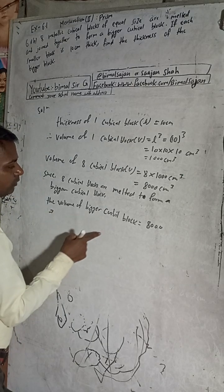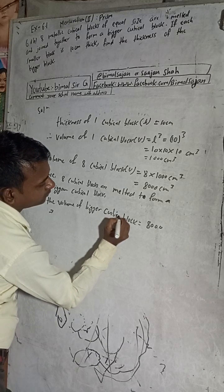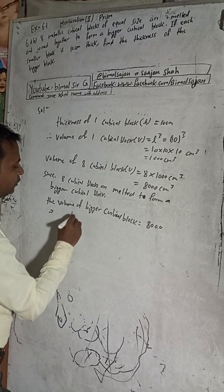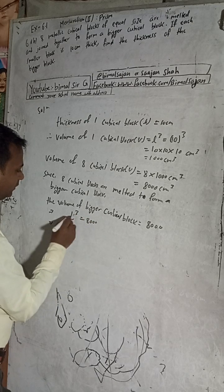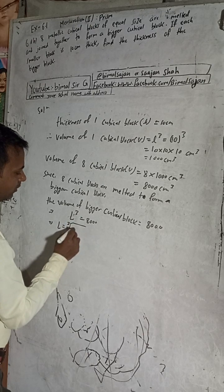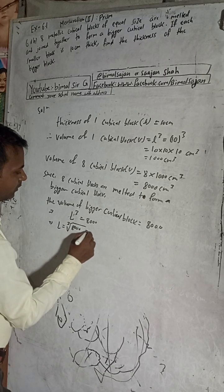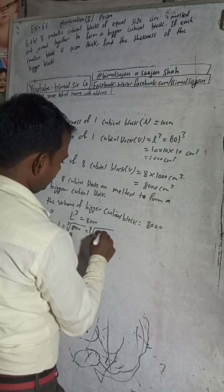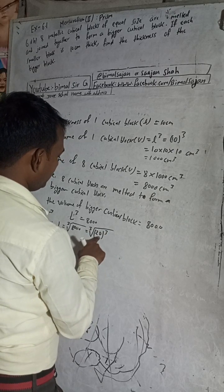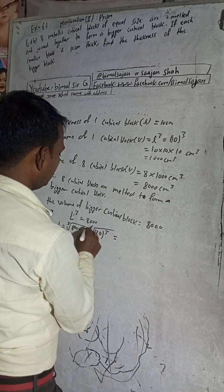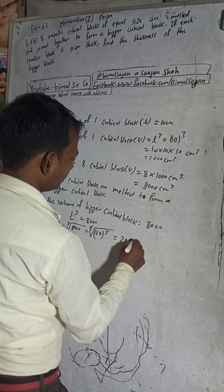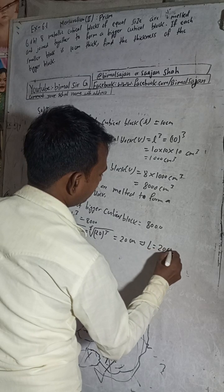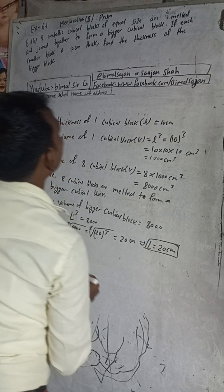The formula for the bigger cubical block is again L cubed. So L cubed equals 8000. This means L is equal to the cube root of 8000. The cube root of 8000 equals 20, because 20 cubed equals 8000. Therefore L equals 20 cm.